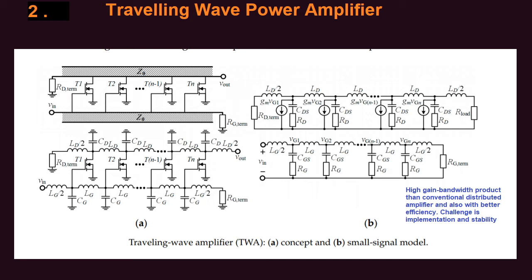The drain current of the transistor is out of phase with the drain-source voltage, and this creates the negative resistance. When solved, it gives very high gain, which is one of the major motivations for using the traveling wave power amplifier. It is very robust, but the biggest challenge remains stability. Another very important criterion for both distributed and traveling wave amplifiers is gain flatness, which is also a very important parameter to manage. The efficiency of the traveling wave amplifier is much better than that of the traditional distributed amplifier.